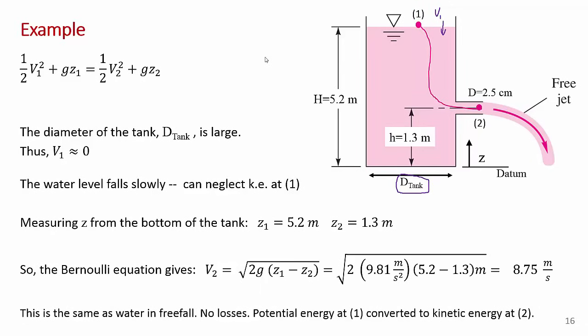But since you're not given it and you're told it's large, we're going to make the assumption that the velocity at one is zero. So we can neglect the kinetic energy at point one. That's a reasonable assumption.